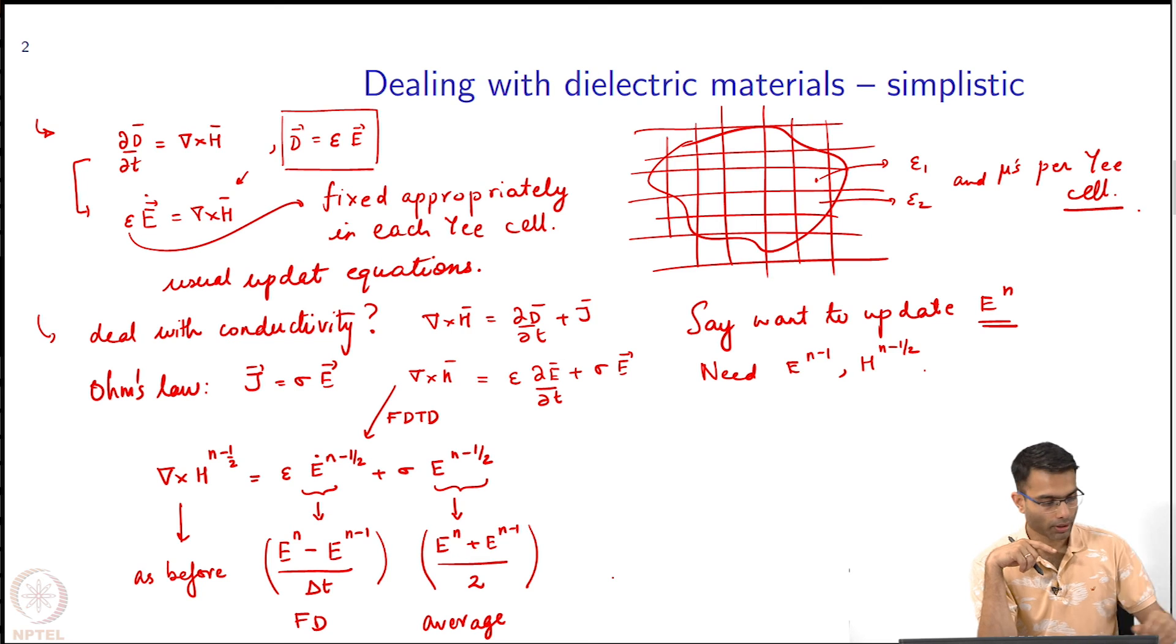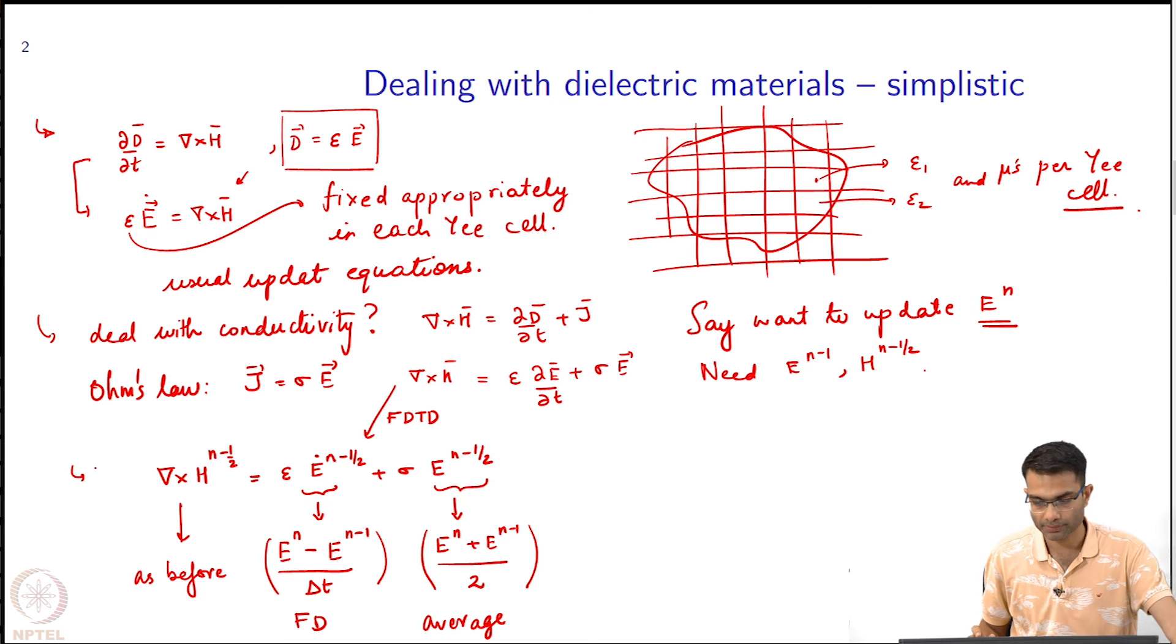Now, what we could do, I can simplify this expression that I have, this update equation. I can simplify this. Typically I want to update for e n. I will bring e n to one side and everything else to the other side. I can do that simplification.